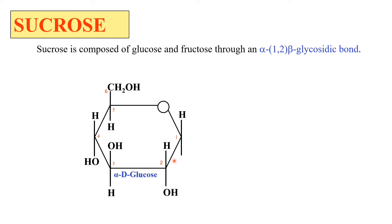Here, this blank space denotes the hydroxy group because it is alpha-D-glucose. The hydroxy group at the first position is below the plane. This is the alpha-D-glucose and this is the beta-D-fructose.